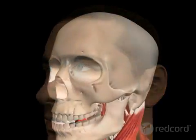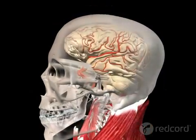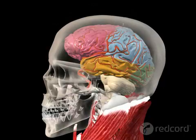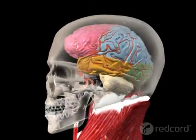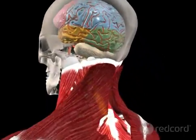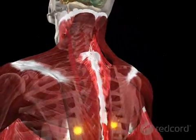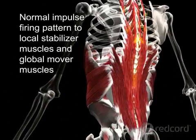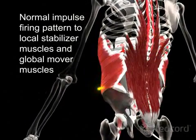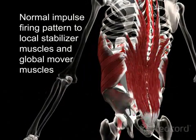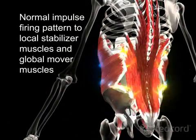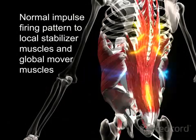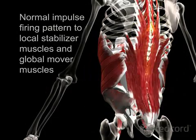When movements begin, signals from the central nervous system activate the deeper stabilizing muscles before targeting the larger muscles that mainly perform movements. This preparatory activation of the deeper muscles provides efficient movement control.